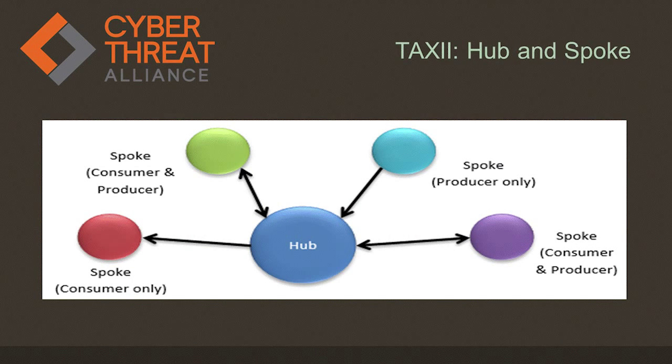One of the interesting things about STIX and TAXII is that TAXII supports a hub-and-spoke model — every individual in the sharing community can push their information to a central hub, subscribe to whatever information they care about regardless of who submits it, and pull that down. So instead of the multiple peer-to-peer exponential growth, it's just one connection to the hub that takes care of whatever it is you want to share — both receiving and sending. We're moving to this currently: about 10,000 samples being pushed in by 10 different connections per day, and about 100,000 per day being downloaded as well.